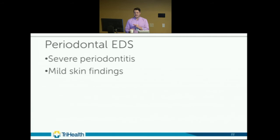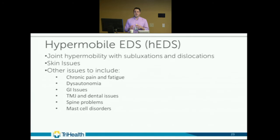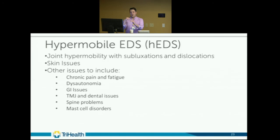An important note before transitioning to hypermobile EDS: all other types of EDS have an actual discovered genetic mutation — you can see the specific gene and connective tissue involved. For hypermobile EDS, we don't yet know the gene or the connective tissue involved, but from genetic analysis we do know it is autosomal dominant.